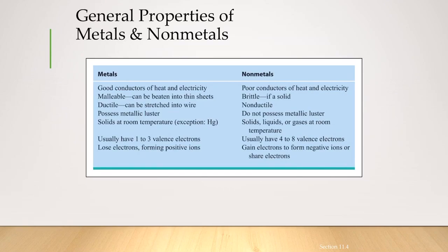Metals can be malleable and ductile. Malleable means it can be beaten into thin sheets, and ductility means it can be stretched into wires, whereas non-metals, they are brittle, which means they can be broken down.